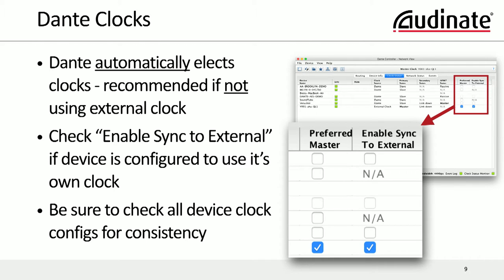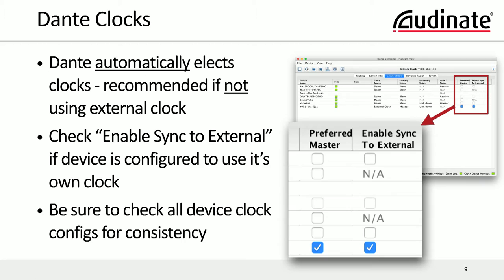If you are using a console to clock your entire system — which would be entirely logical if you're using other digital devices at the same time — you can tell Dante to use that clock from that console. Set it up in the console and Dante Controller, tell it to enable syncing to that, and away you go.